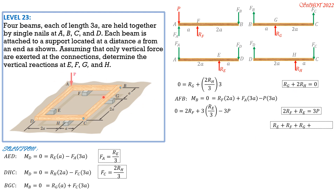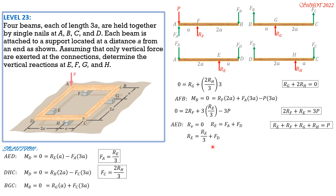Summing vertical forces for the whole system: R_E plus R_F plus R_G plus R_H equals P. We need one more equation since there are four unknowns. Going back to AED and summing vertical forces: R_E equals F_A plus F_D, where F_A equals R_E/3. Therefore F_D equals (2/3)R_E.